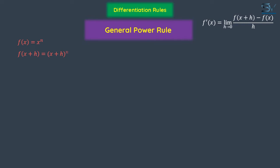Right now we can put this in the definition of the derivative. It's now x plus h to the nth power minus x to the nth power divided by h. To solve this, we will use our formula a to the nth power minus b to the nth power.